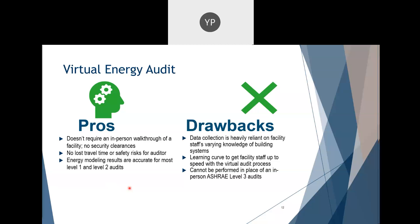The drawbacks associated with this process are that data collection is heavily reliant on facility staff's knowledge of building systems, and there is a bit of a learning curve to get on-site people up to speed. Also, virtual audits are meant for a level one or level two analysis — they are not meant to replace a more detailed investment grade audit, which can also be called an ASHRAE level three audit.